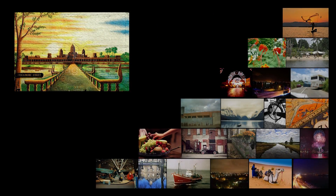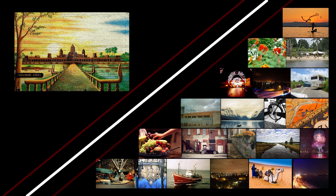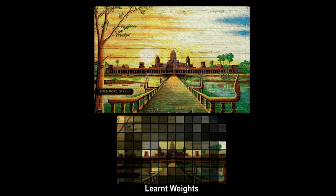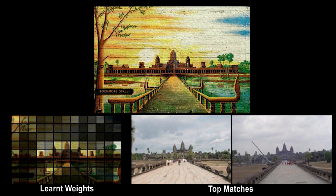Using recent work in the object recognition community, we train a discriminative classifier to separate our image against a large number of negative examples. We treat this learnt separating boundary as our similarity metric for the given query. This learnt boundary can be treated as re-weighting the parts of an image based on which are more unique or more important to a human observer. By using our learnt similarity metric, we give higher weights to the informative parts like the temple and get better matches.